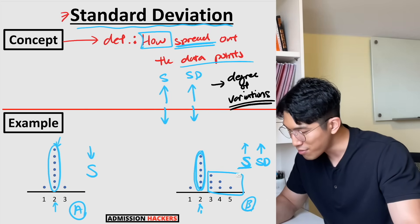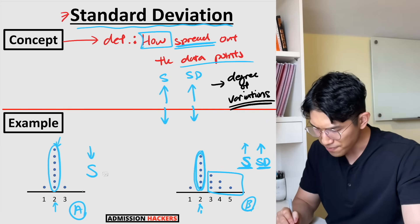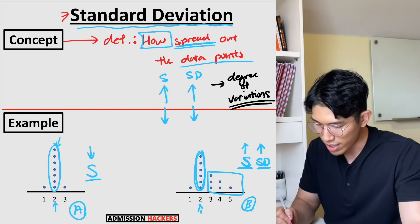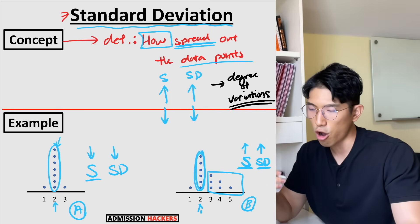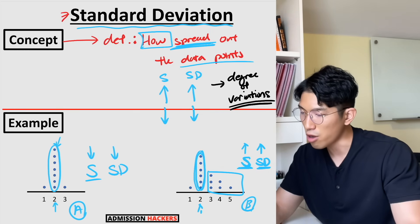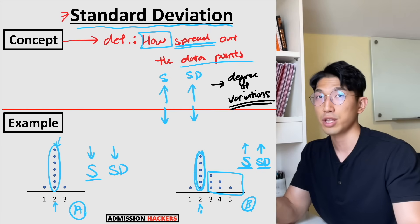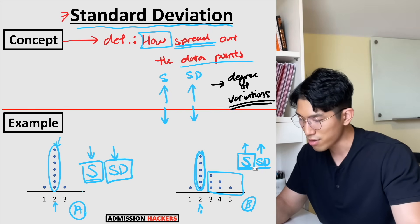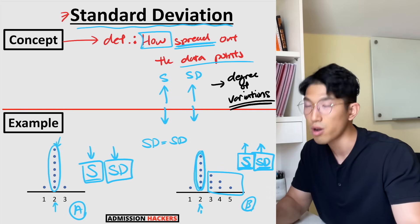Because data set B is more spread out, that tells us the standard deviation is going to be higher for B. For data set A, because it's clumped in just one spot and not very spread out, the standard deviation is going to be lower. Not much spread means low standard deviation. If the data points are very spread out, standard deviation is going to be high. If they're spread out evenly, their standard deviations are going to be equal to one another's.